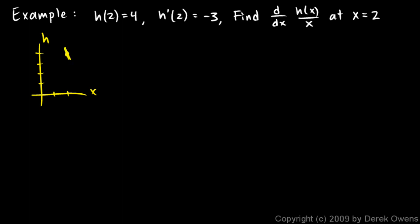Now I don't know if this function is doing this, or if it's doing this, but I know that when it goes through this point right here, at that instant, right there at that point, it has a slope of negative 3. That's function h. I only know what it looks like right at that one point.